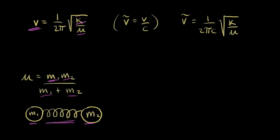If you increase the force constant — increase the spring constant — that's like increasing the strength of the bond, so obviously you would increase the frequency of bond vibration. A stronger bond vibrates faster than a weaker bond. Also, if you decrease the reduced mass, mathematically that's also going to increase the frequency of vibration.